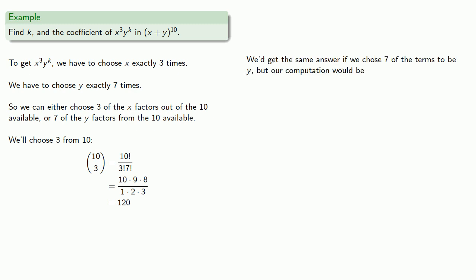It's worth pointing out, we'd get the same answer if we chose 7 of the terms to be y. But in that case, our computation would be (10 choose 7), which is 10 factorial divided by 7 factorial times 3 factorial. Our denominator will be 7 factorial, and our numerator would have seven factors, starting with 10 and going down. Numerically we'd get exactly the same value, it's just that (10 choose 7) is a little harder to compute.